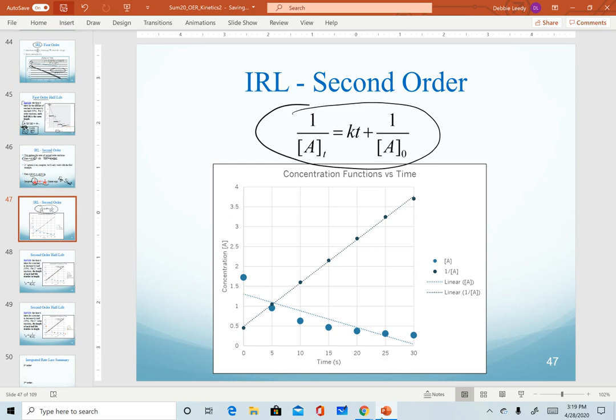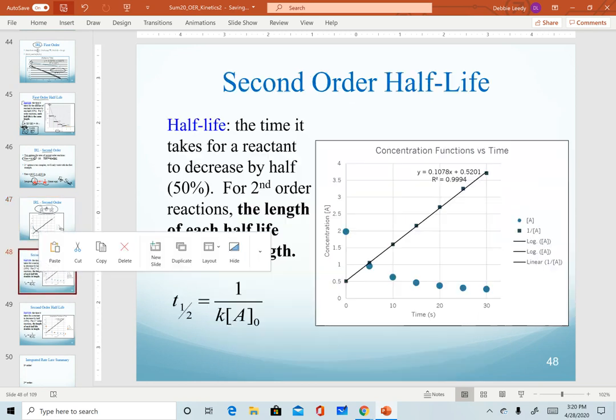And so notice here again, we have our second order integrated rate law. For another reaction, if I just plotted concentration versus time, we get this downward gradual slope. Once I take the inverse of every concentration value, that's what these black dots are, I get a perfectly straight upward sloping line. And notice I can tell it's upward sloping because my slope has a positive sign.